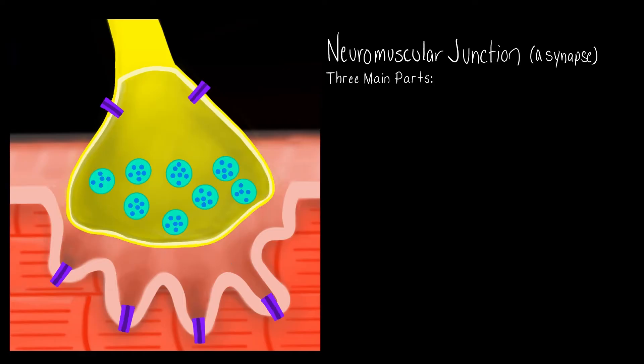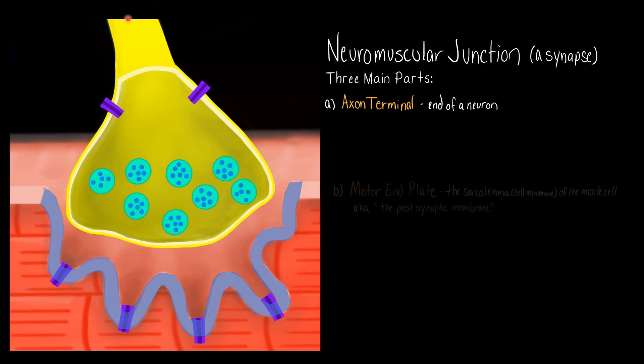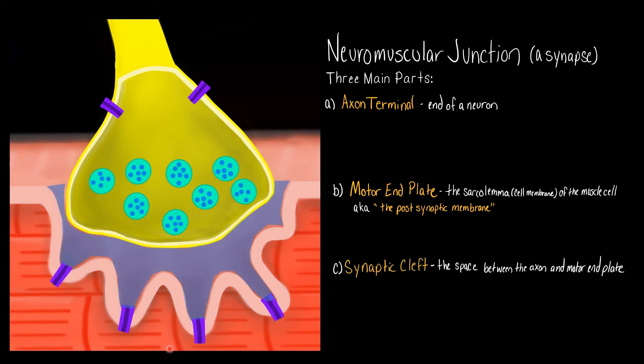And it is going to have three main parts. So the very end of the neuron is called the axon terminal. And then on the muscle side of things, we have the cell membrane of the muscle cell, which the cell membrane of the muscle cell is also called the sarcolemma. But the sarcolemma here, specifically at the neuromuscular junction, is also called the motor end plate. It can also be called the postsynaptic membrane, because if you think about the direction of the message, the message is coming from the neuron to the muscle, and that's why this would be post-synaptic. Then the space in between the axon and motor end plate is the synaptic cleft. So those are the three main parts.